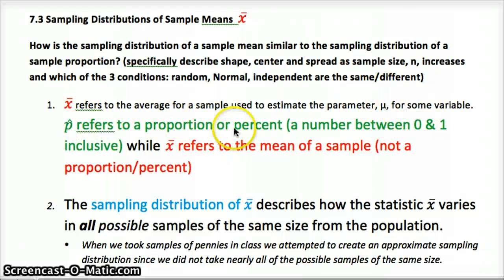So p hat refers to a proportion or percent, a number between zero and one, inclusive of zero and one, or between zero percent and 100 percent. X bar refers to the mean of a sample. It's not a proportion or a percent.